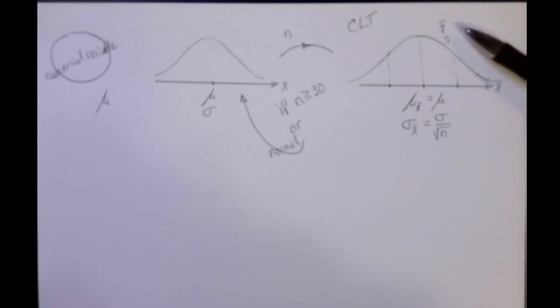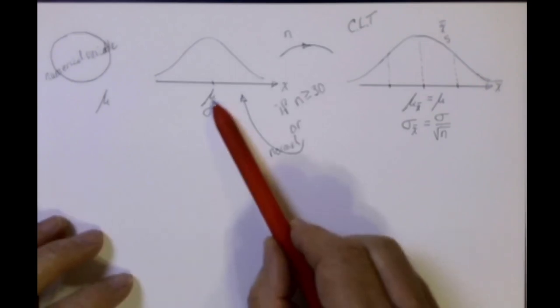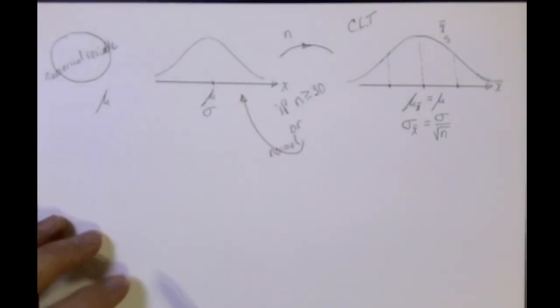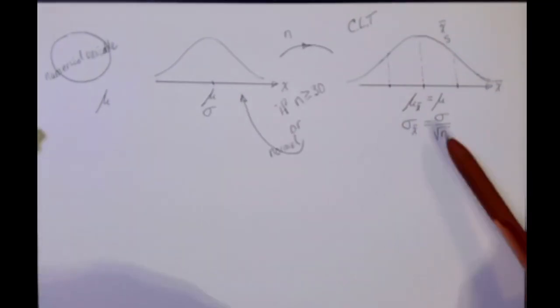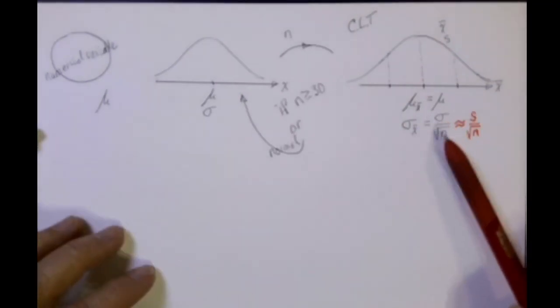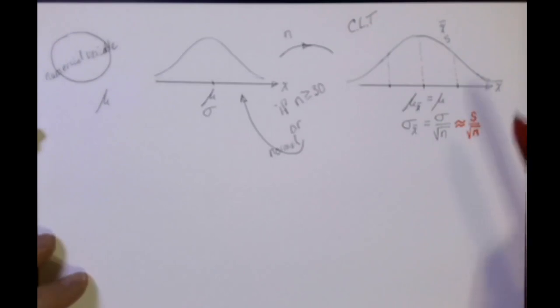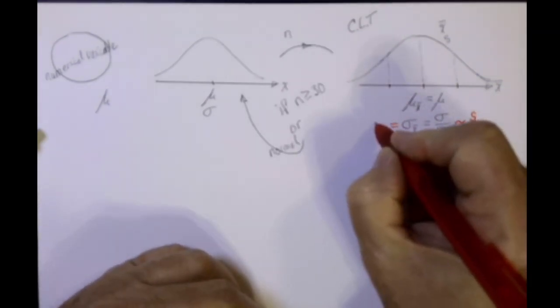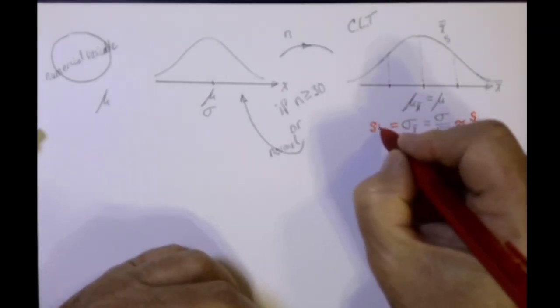So once we take a sample, we can find the sample mean and the sample standard deviation. As it turns out, most often we will not know what the original standard deviation was of this original distribution. Therefore, we're going to have to approximate this standard deviation with the best information available to us, which is the sample standard deviation divided by the square root of n. This is such an important standard deviation that we're going to call it a standard error, SE.